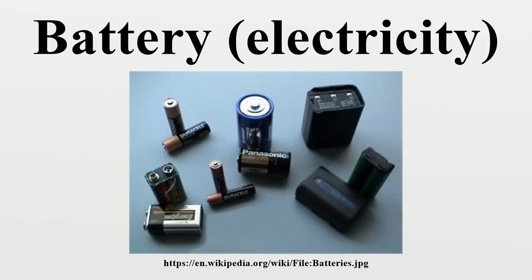A 2C discharge rate means it will discharge twice as fast. A 1C discharge rate on a 1.6Ah battery means a discharge current of 1.6A. A 2C rate would mean a discharge current of 3.2A.